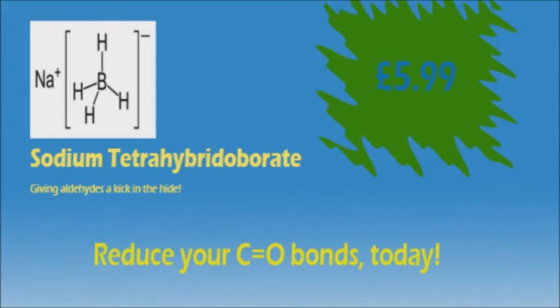Sodium Tetrahydrido Borate is not to be used to produce C=C double bonds as hydride ions cannot be used because of a negative charge and therefore is repelled by the high electron density of the C=C double bond.